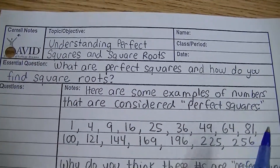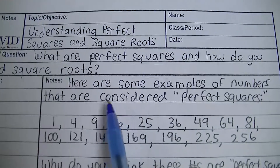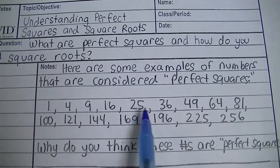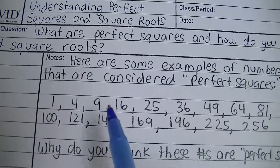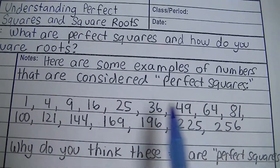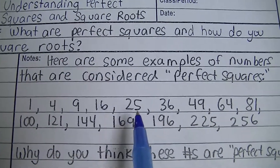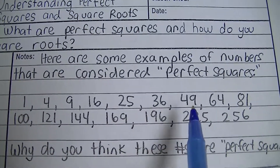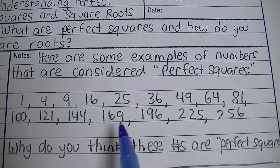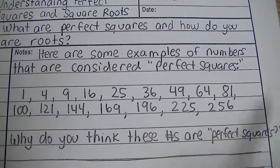We'll dive into some vocab real quick. Here are some examples of numbers that are considered perfect squares — there are many more, but here are the first few: 1, 4, 9, 16, 25, 36, 49, 64, 81, 100, 121, 144, 169, 196, 225, 256, and so on and so forth.